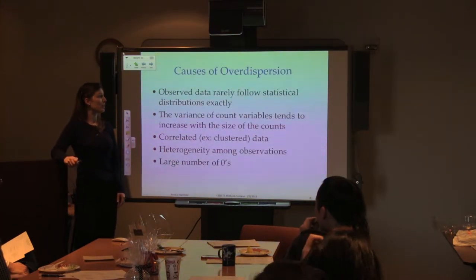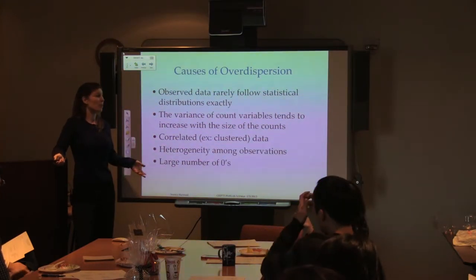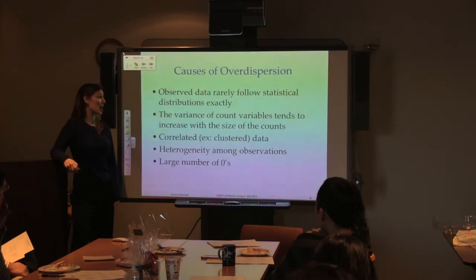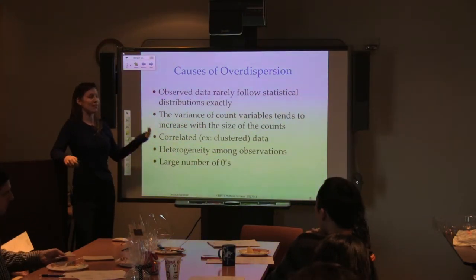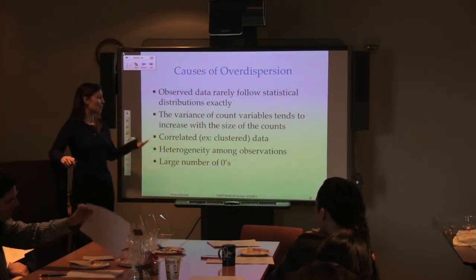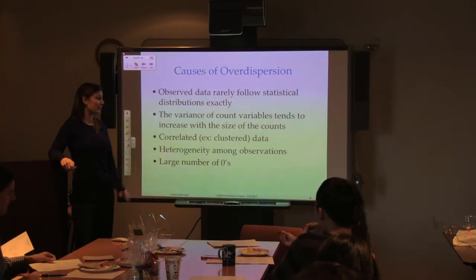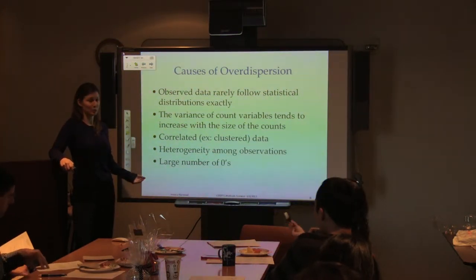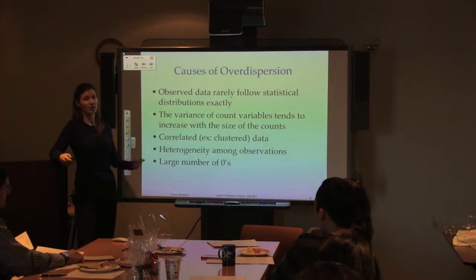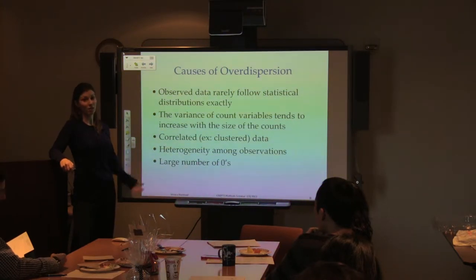Over-dispersion can be caused by many factors. One of the most common is that observed data rarely follow a statistical distribution exactly. For count variables, the variance often increases with the size of the counts. Lack of independence — such as correlated or clustered data — can also cause over-dispersion, as can heterogeneity among observations in your sample or a large number of zeros in your data.